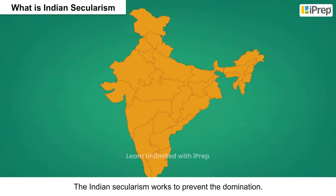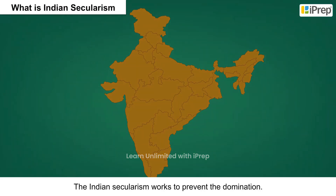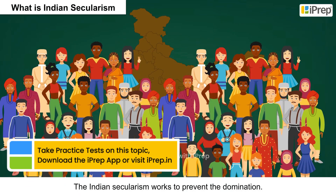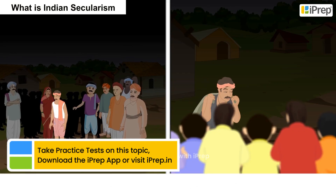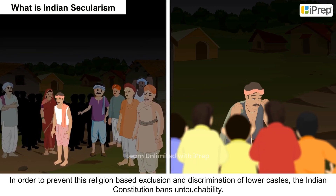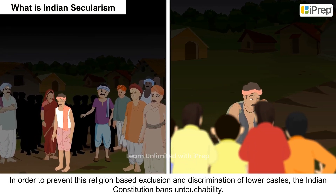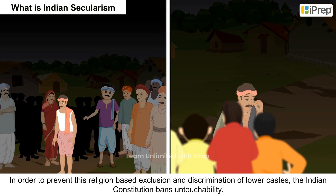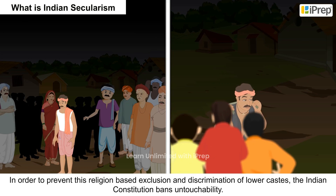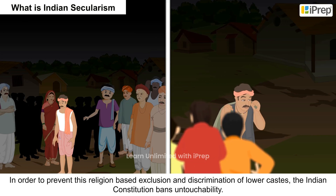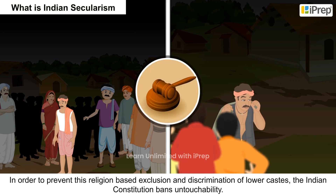Indian Secularism works to prevent domination. In order to prevent religion-based exclusion and discrimination of lower castes, the Indian Constitution bans untouchability.